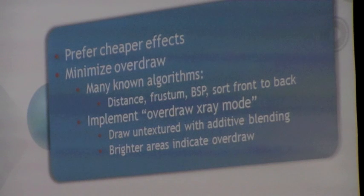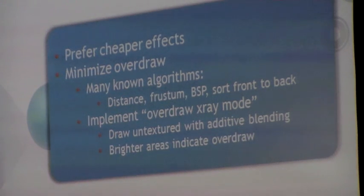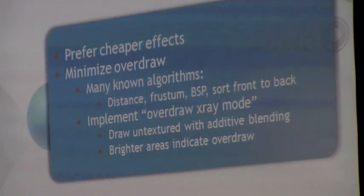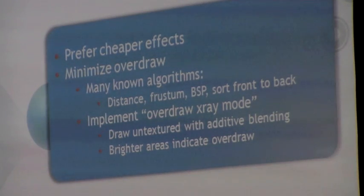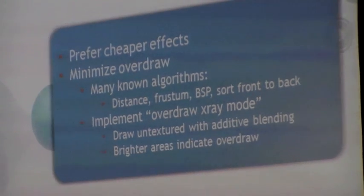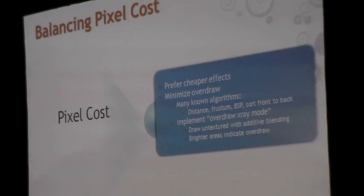There are many algorithms for reducing overdraw. Simple approaches include: don't draw things that are very far away, use frustum culling, use hierarchical occlusion systems like BSP trees. At a very simple level, just sort your objects from front to back and draw the close ones first — the graphics card can then efficiently reject distant pixels without drawing them. A very useful tool to build into your game is an overdraw x-ray mode: disable textures, use additive alpha blending, and set your color to dark gray. Every time a pixel is drawn it gets brighter, so white areas on screen indicate pixels drawn many times — you should look at changing your artwork or culling in those areas.